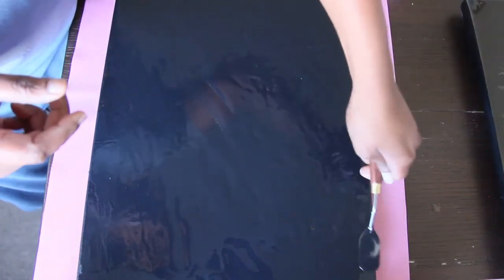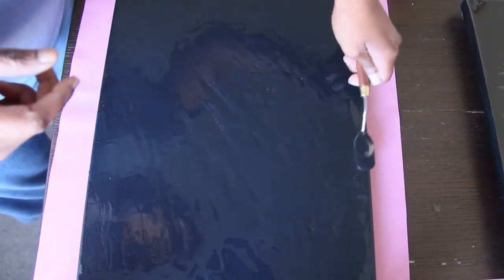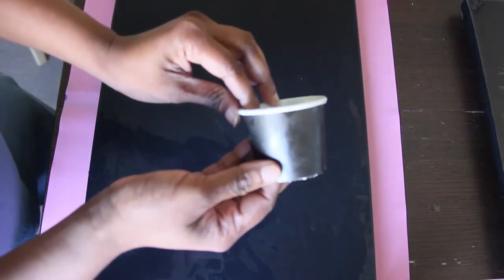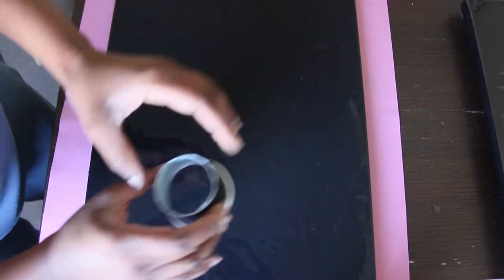So once I fully cover the canvas I'm now ready to pour the paint. For this open cup pour I'm using a small coffee cup. I've cut the bottom part out and pouring the colors through that opening.